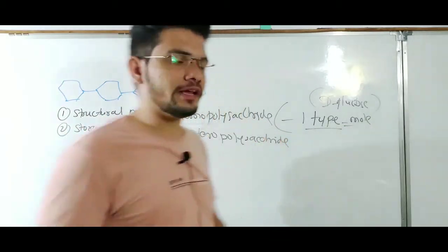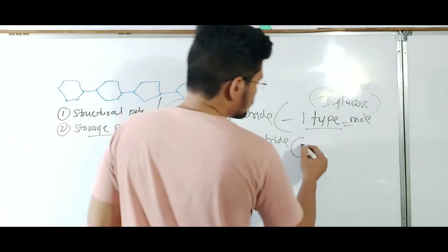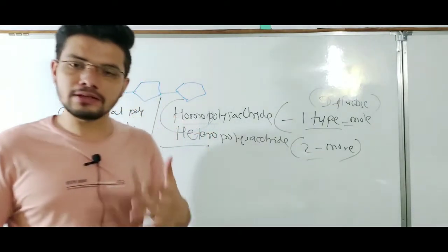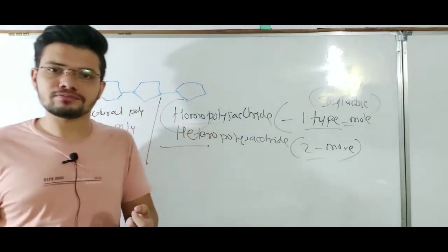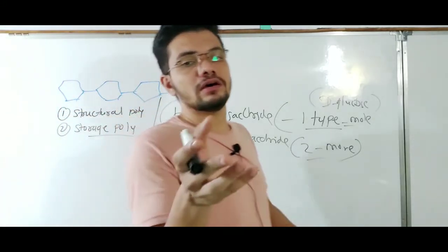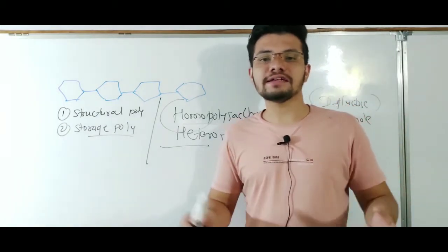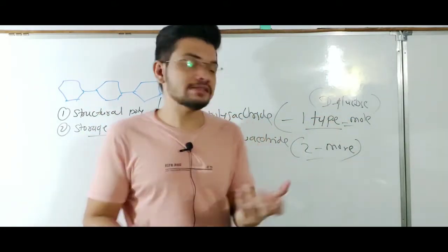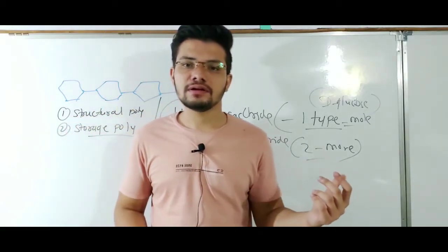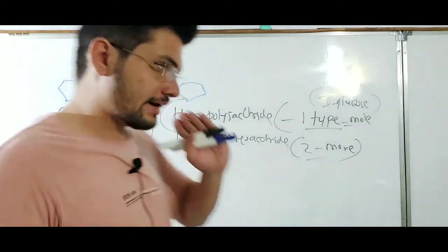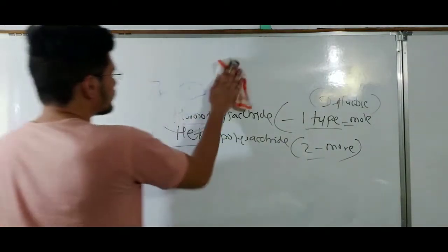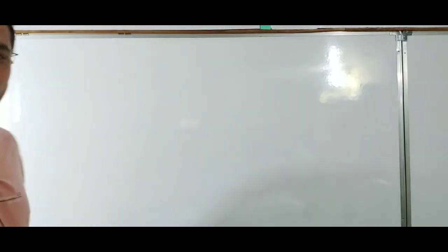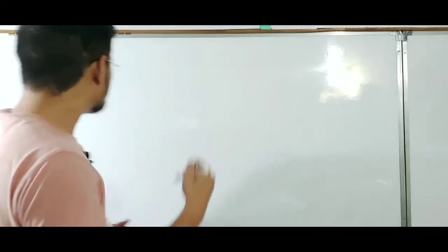Hetero polysaccharides consist of two or more types of monomeric units. The best example is peptidoglycan, which is a polymer of NAG (N-acetyl glucosamine) and NAM (N-acetyl muramic acid). Since two types of sugars are involved, that's why it is a hetero polysaccharide.